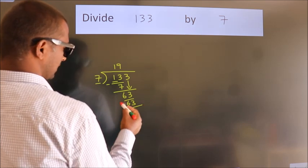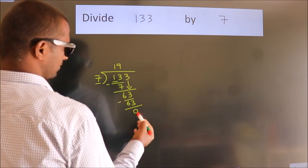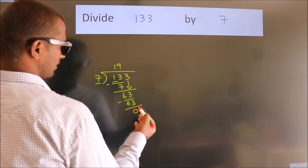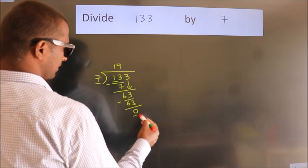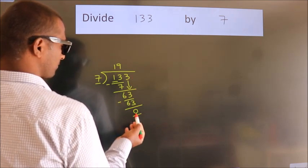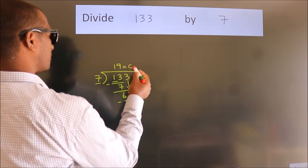Now we subtract. We get 0. After this, no more numbers to bring down and we got remainder 0. So this is our quotient.